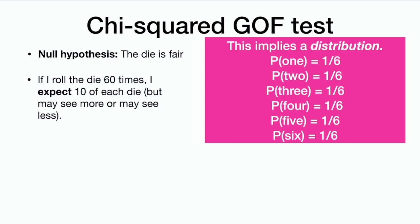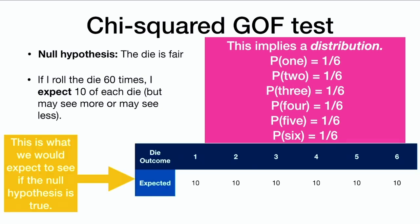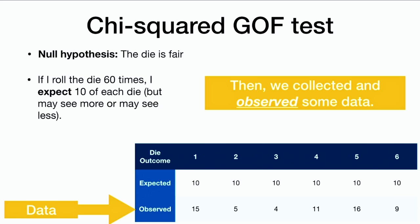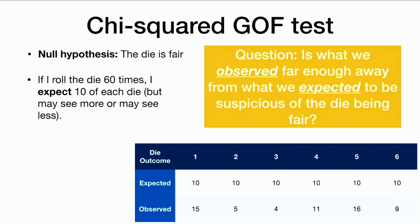As a further consequence, if I roll the die 60 times, I expect to see approximately 10 of each outcome, but I may see more or less. So we expect 10 of each outcome on 60 rolls. However, then we collect some observed data, and it's not going to look exactly like we expected — we're never going to see exactly 10 of each outcome. Our question is: is what we observed far enough away from what we expected to be suspicious of the die being fair? We need to do a statistical test to find out.